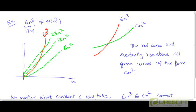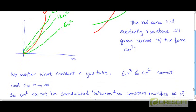So the red curve will eventually rise above all green curves of the form cn². So no matter what values of the constant c we take, we can never maintain this inequality 6n³ ≤ cn² for large values of n. Because for large values of n, n³ is going to eventually outgrow n². So 6n³ will eventually rise above cn². Doesn't matter what value of c you choose, as long as it's a constant.